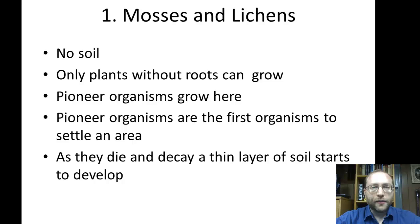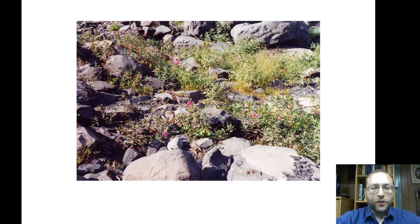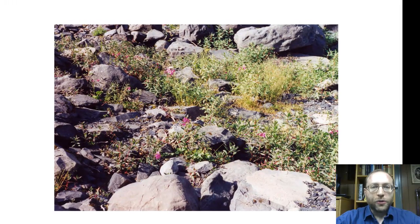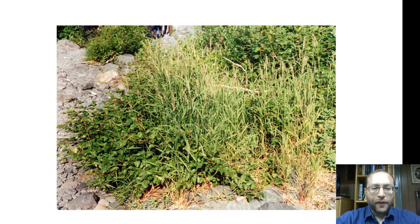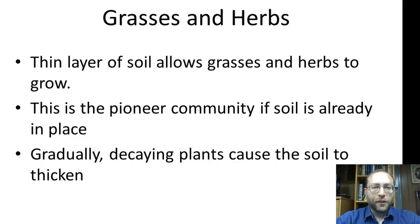As time goes by — and this time can last in terms of decades, or centuries or eons — as these pioneer organisms die, a thin layer of soil starts to develop. Once you start getting this thin layer of soil, plants with roots can grow. Over here we see some herbs and some grasses growing, just a few feet away. And a few more feet away, as the soil gets deeper, this new community has taken hold much more so. Gradually decaying plants cause the soil to thicken.